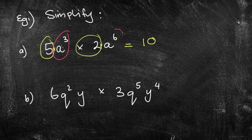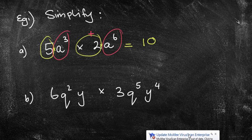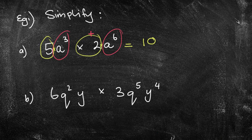So now I can deal with my algebraic terms, a cubed times a to the power of 6. So the rule was, when we're multiplying, the bases are the same, we can simply add the powers. So we're going to have 10a to the power of 3 plus 6 is 9.